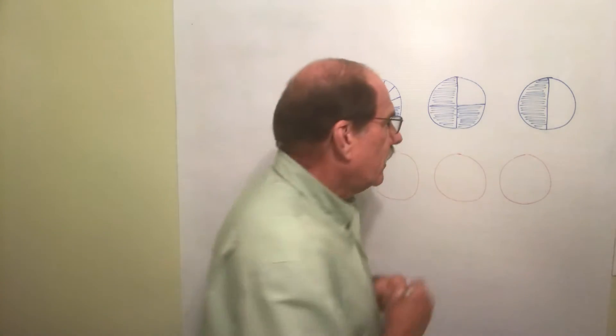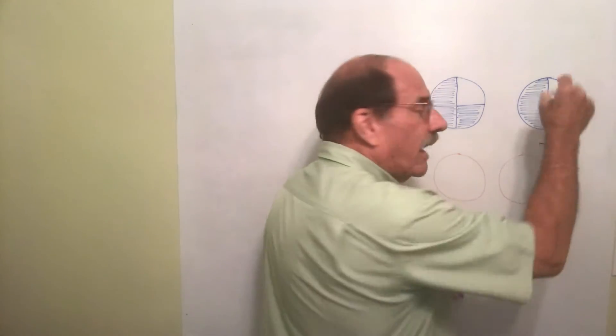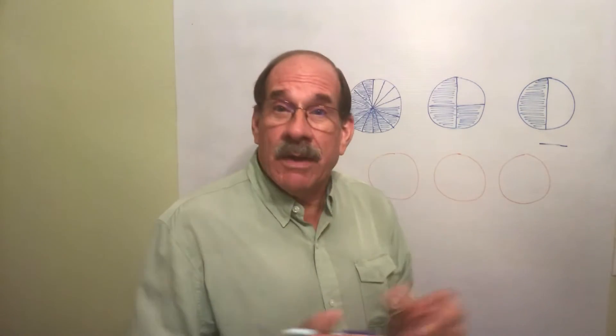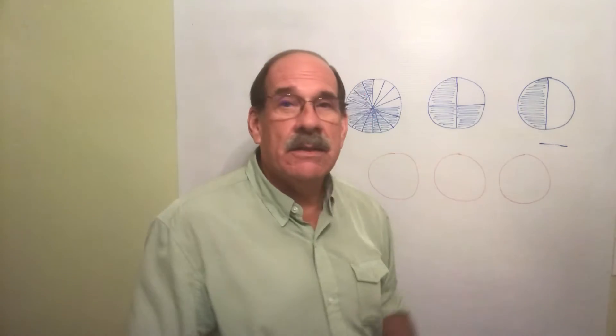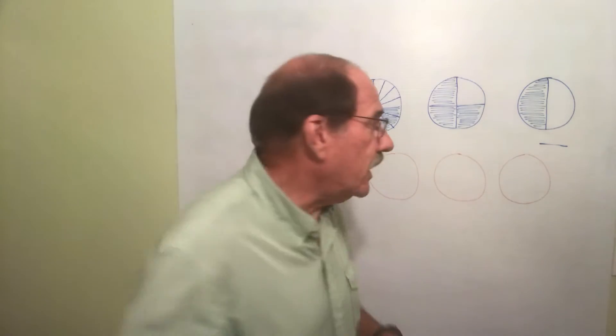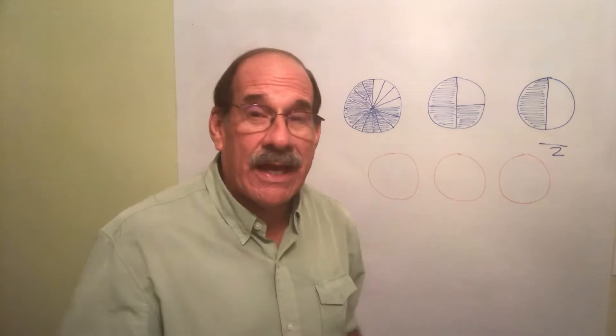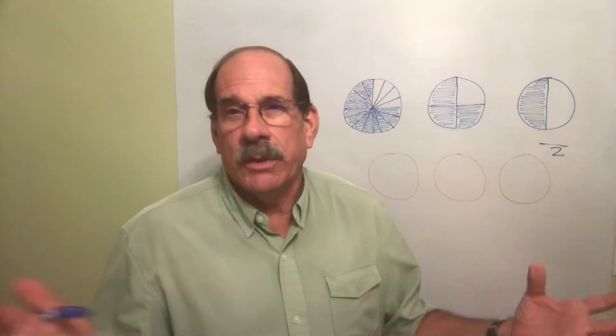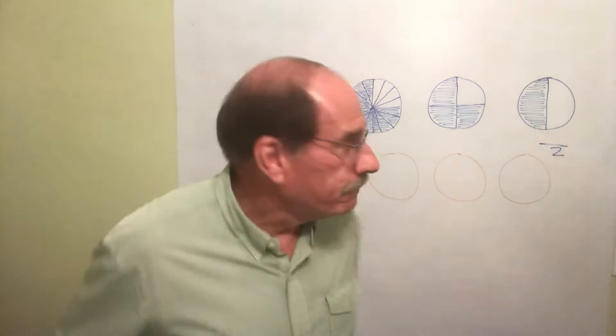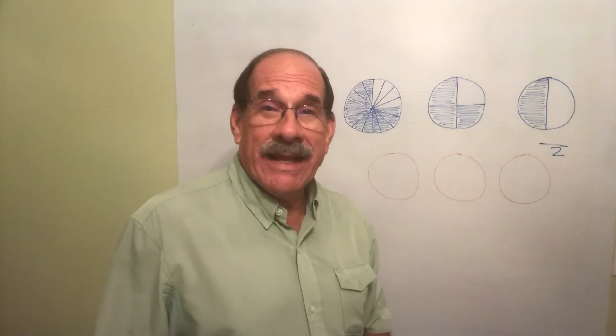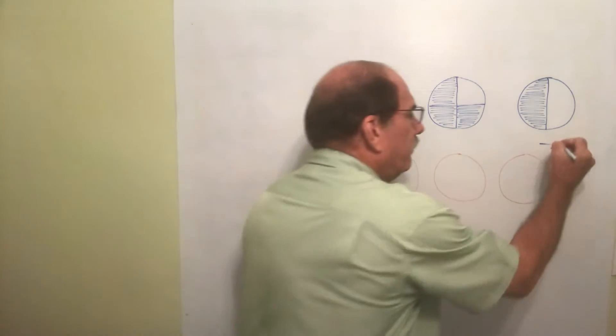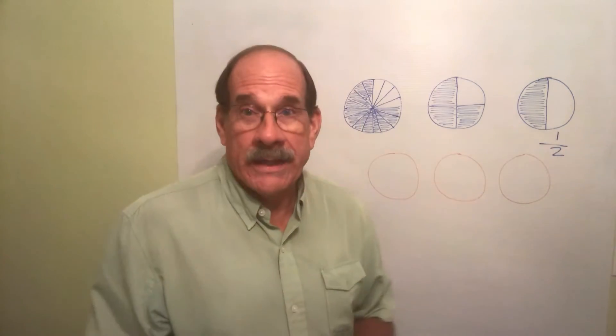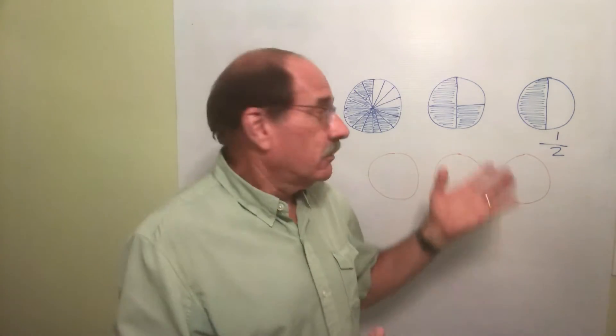A fraction has two parts: a top and a bottom. The bottom number is how many we cut the thing into - I cut the pizza into two equally sized pieces. The top is how many of those pieces I get - I'm gonna get one piece. I get one half.